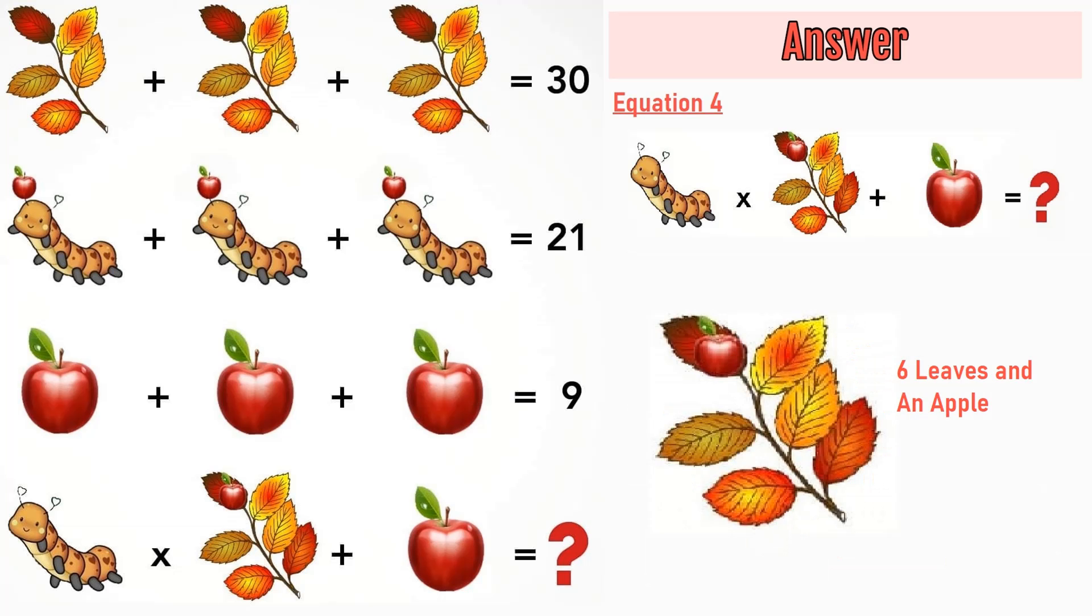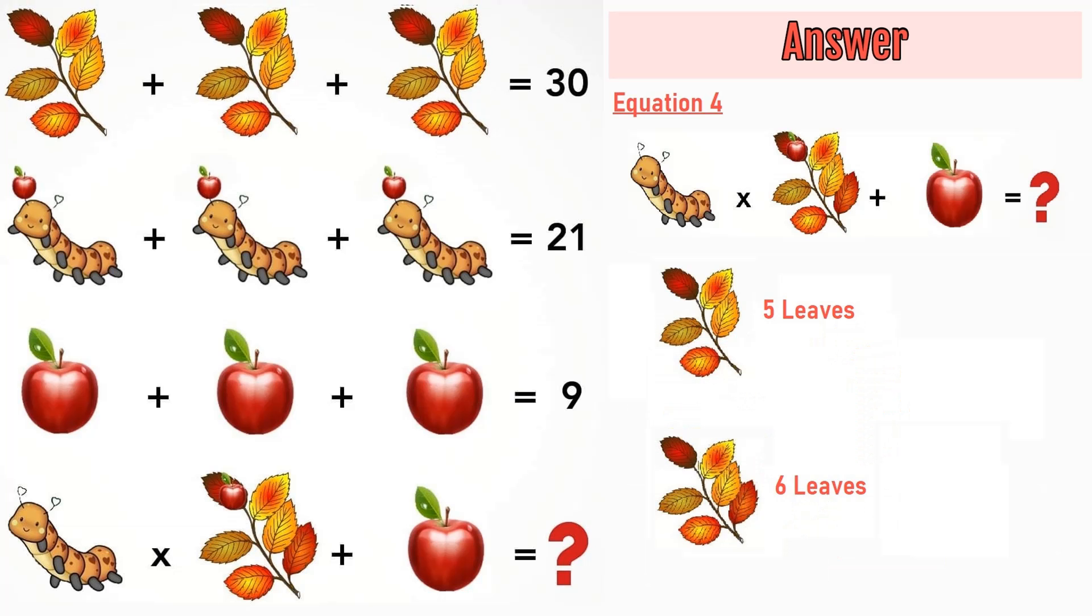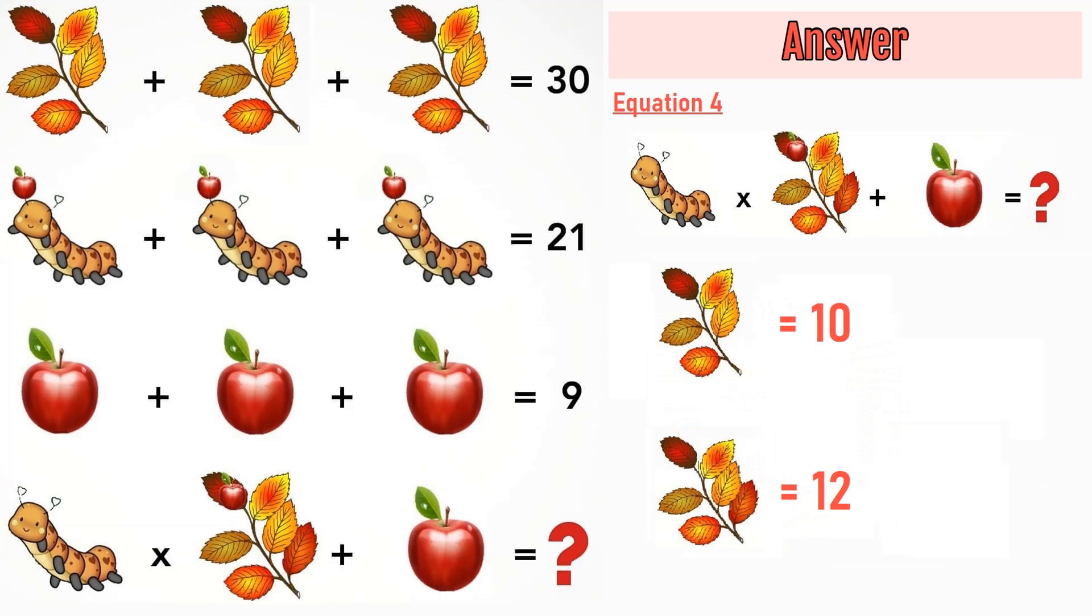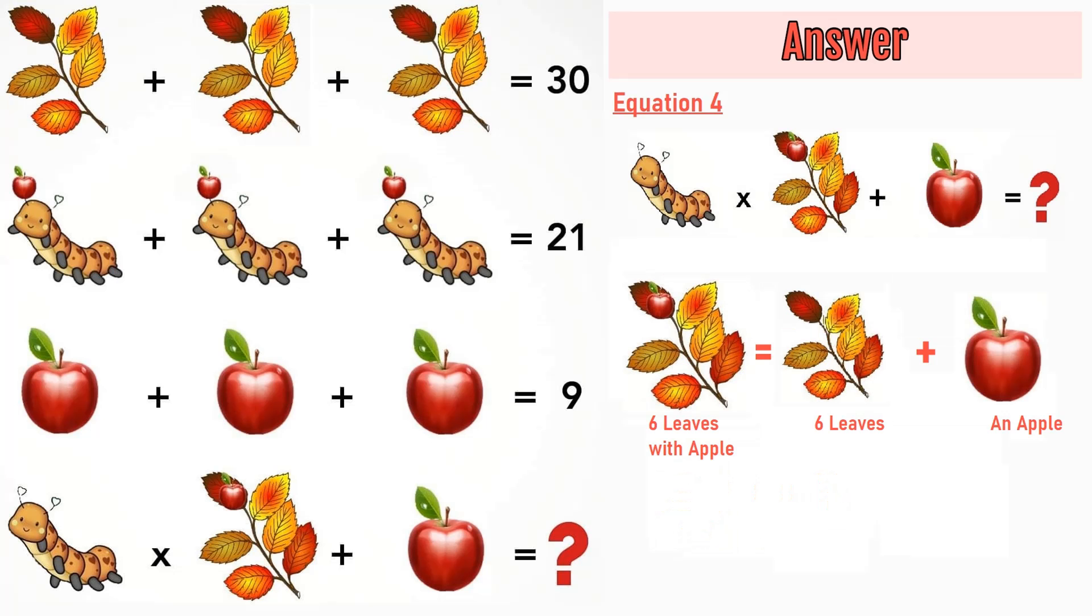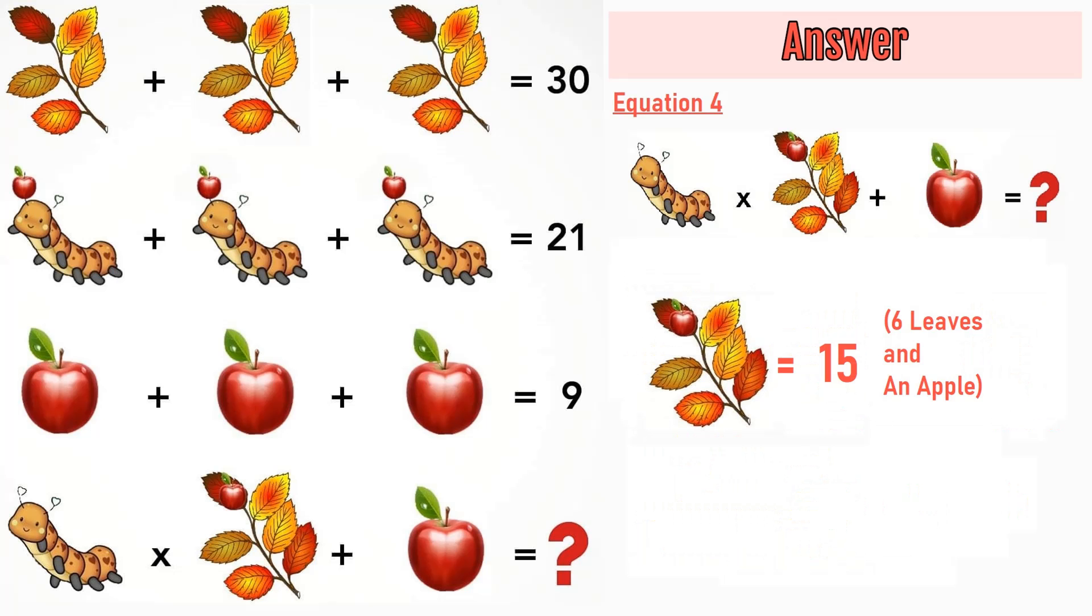Now moving on to the second image, we have 6 leaves and an apple which is equation number 4. From equation 1, we have 5 leaves is equal to 10. So 6 leaves are equal to 12. Also adding an apple in the 6 leaves, we get 12 plus 3 is equal to 15. 6 leaves plus an apple is equal to 15.